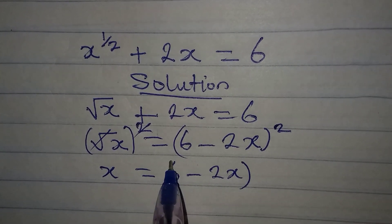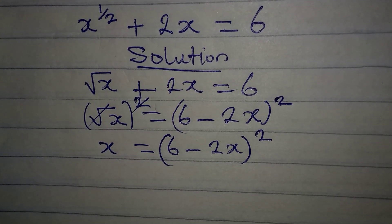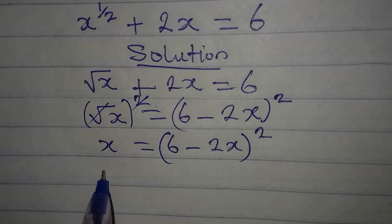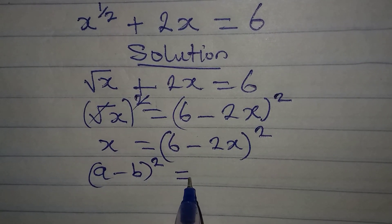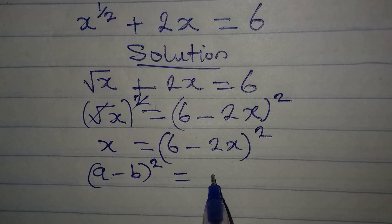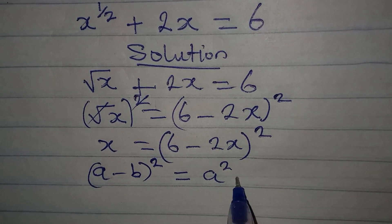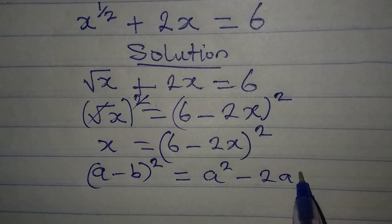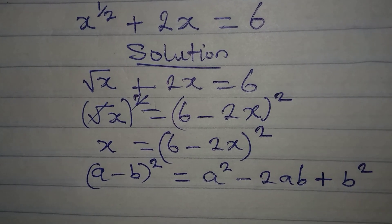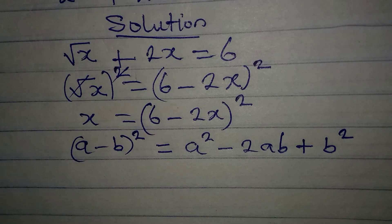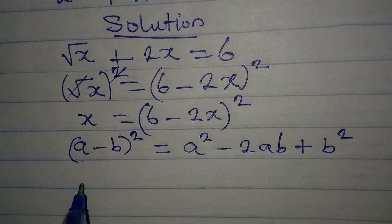Now I want us to look at this very quickly. If you have (a minus b) squared, this gives you a squared minus 2ab plus b squared. I'm going to apply the same expansion here.